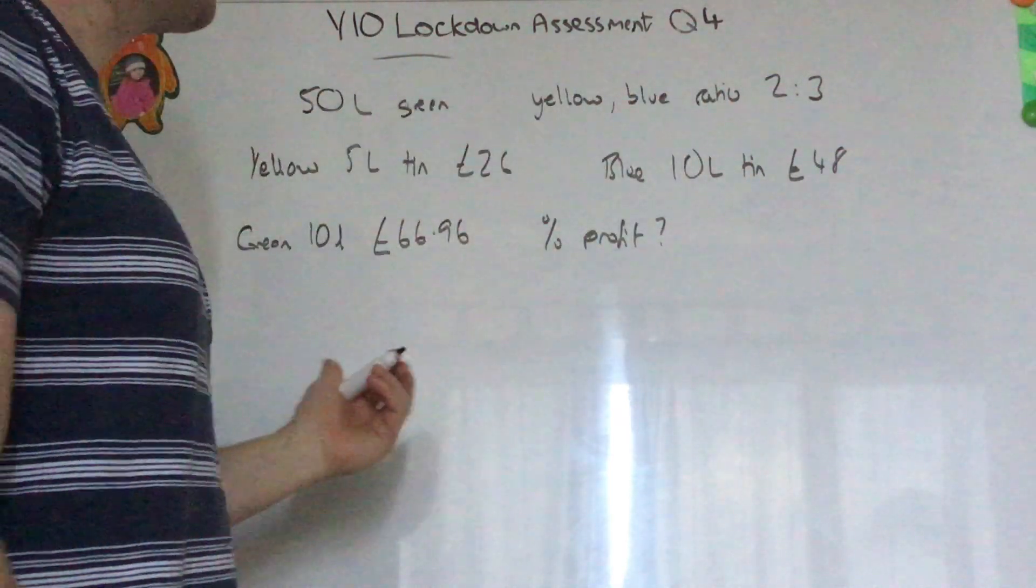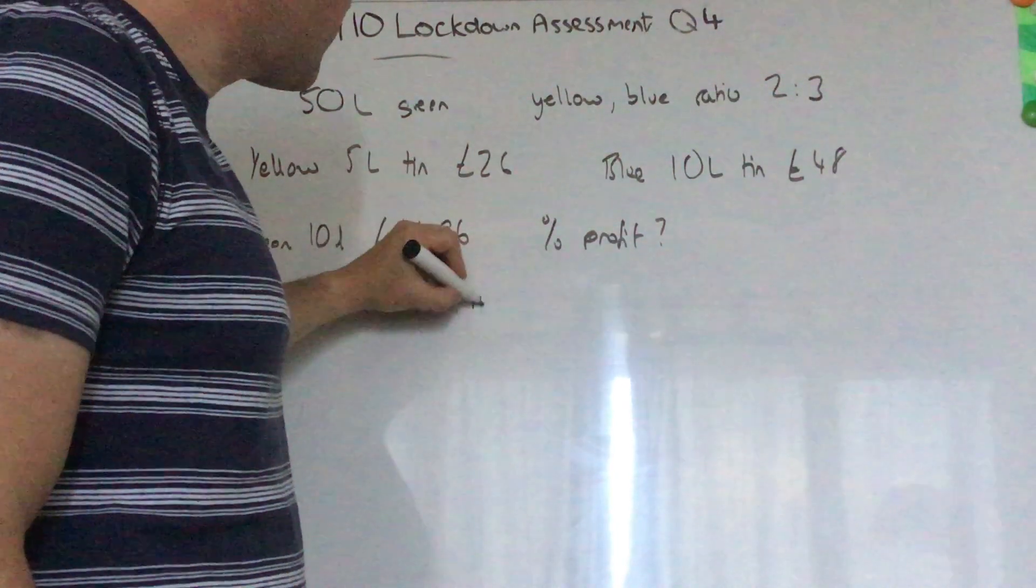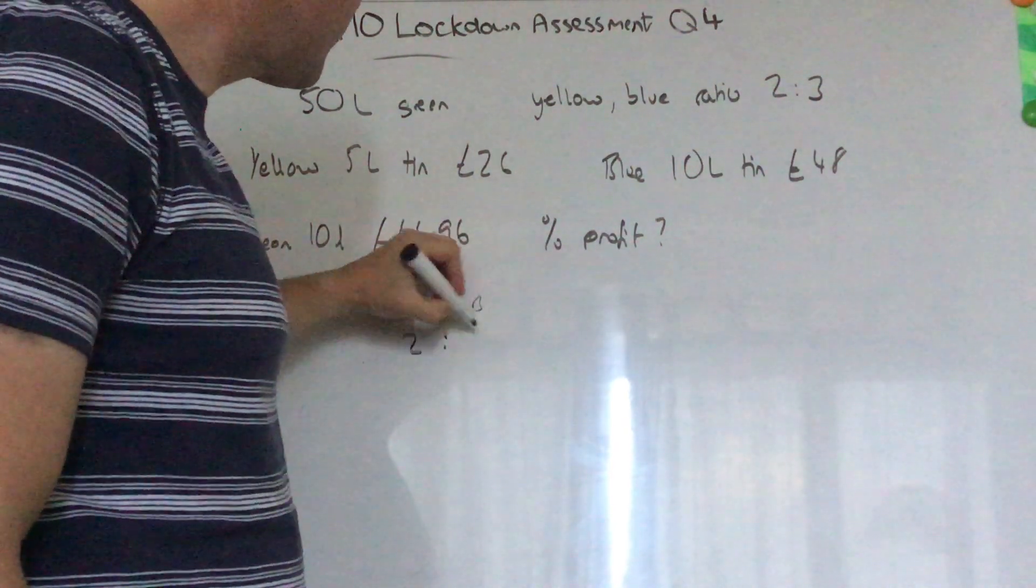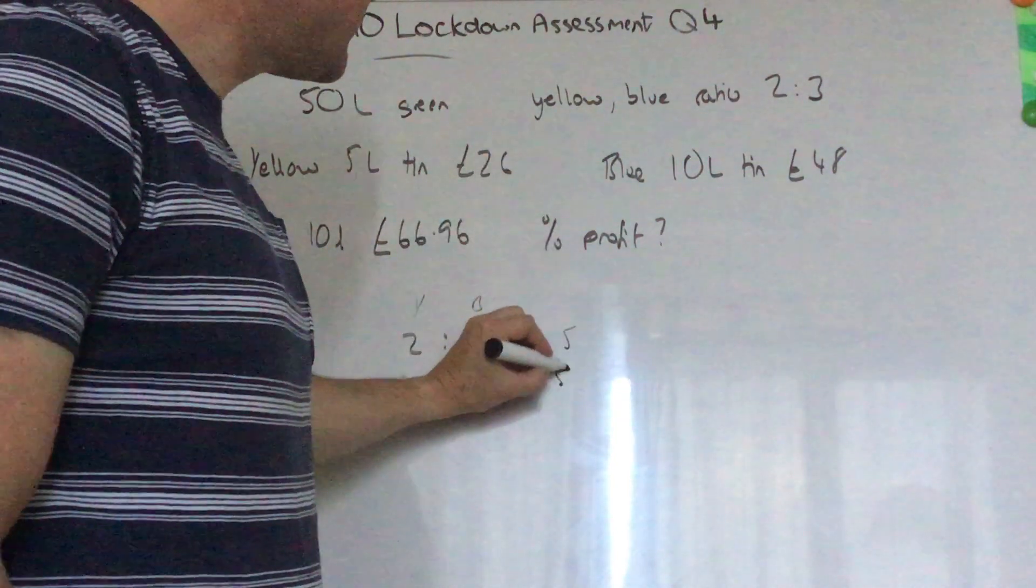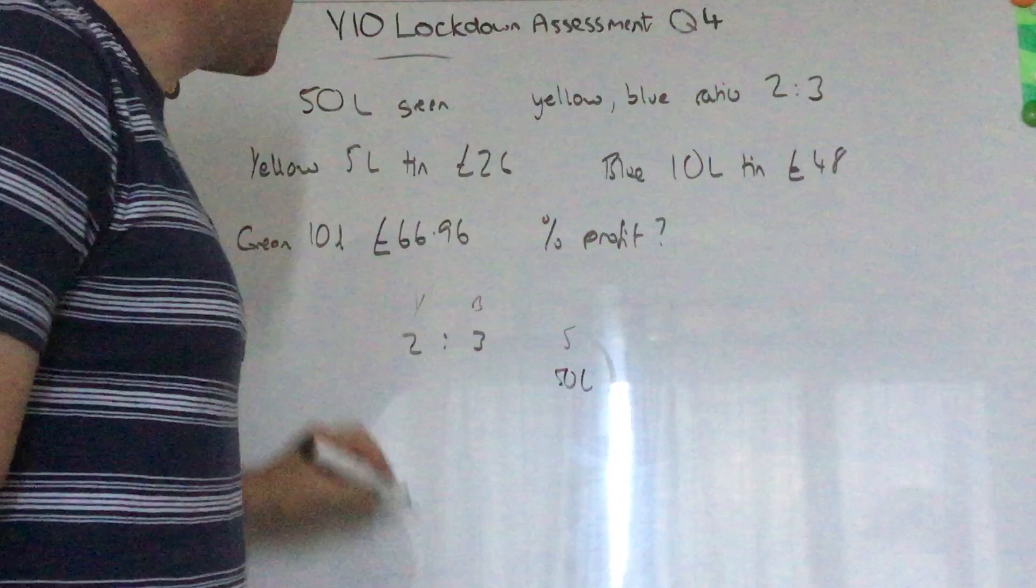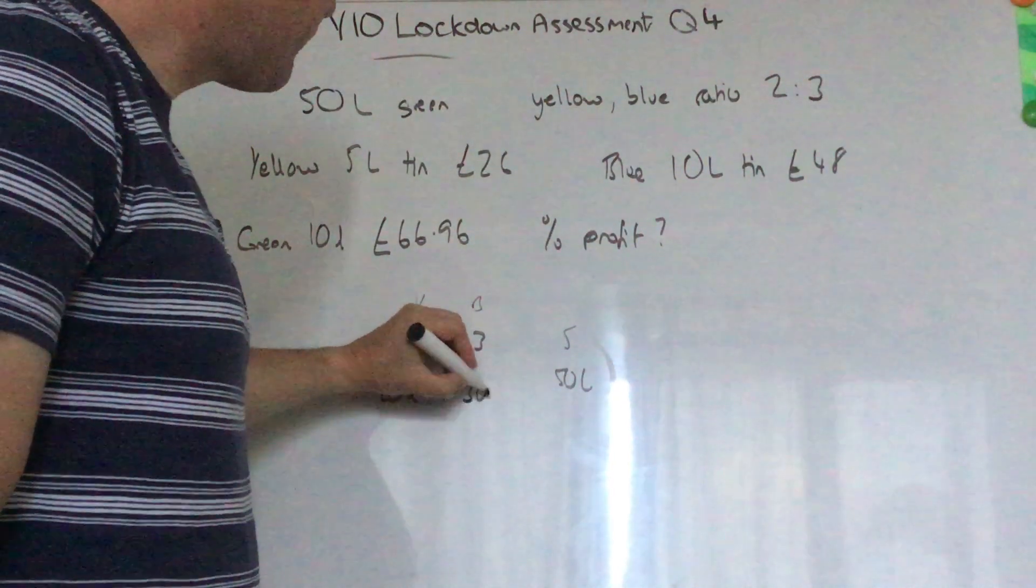First of all we need to know how much paint of each one we want. So we've got yellow and blue in the ratio two to three and they add up to give five, and 50 litres, so we have to times each of them by 10. So I want 20 litres of yellow and 30 litres of blue.